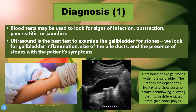An ultrasound can also be used and this is the best test to examine the gallbladder for stones. We look for gallbladder inflammation, the size of the bile ducts, and the presence of stones with the patient's symptoms. On the ultrasound image we can see two gallstones within the gallbladder — the stones are dependently located and show posterior acoustic shadowing, allowing them to be differentiated from gallbladder polyps.